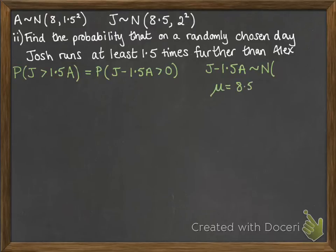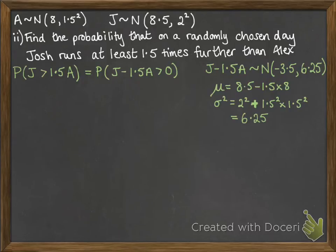Now to work out the mean, we're going to do 8.5 minus 1.5 lots of 8. So the mean of Josh minus 1.5 lots the mean of Alex. So that gives us minus 3.5. The variance will be 2 squared plus 1.5 squared times 1.5 squared. We need to add those variances, remember. We're not subtracting them. Even though it says J minus 1.5A, you must always add your variances. So then we get... Actually it's 6.25.